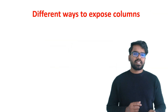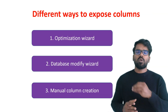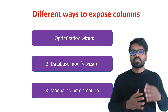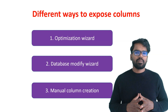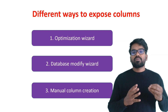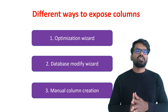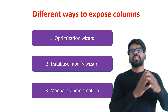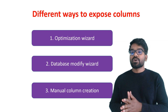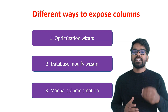So how do we expose these database table columns? In Pega there are three ways to do it. First is the optimization wizard — you can open any property and use the optimization wizard, which helps expose the property into different tables if possible, or directly into the work table. Second is the database modify wizard, which you can use to modify the database table — just make sure you have the right privilege. Third, you can manually expose a property by manually creating a column in the database table, creating a database table instance, and making the connection. In this video I will show you all three ways, exposing three properties at different levels.